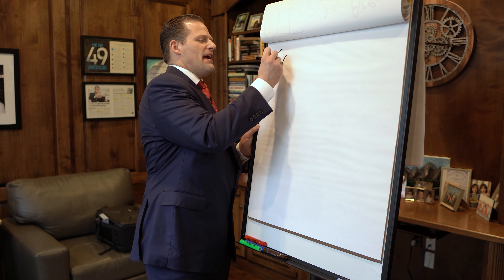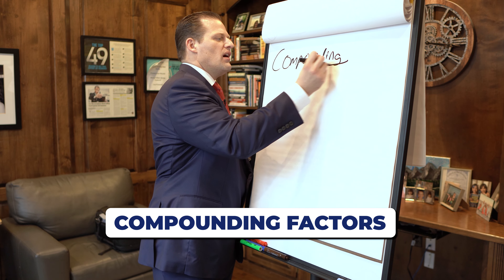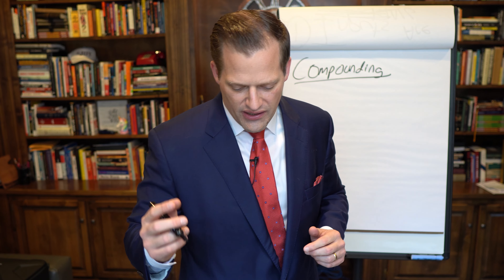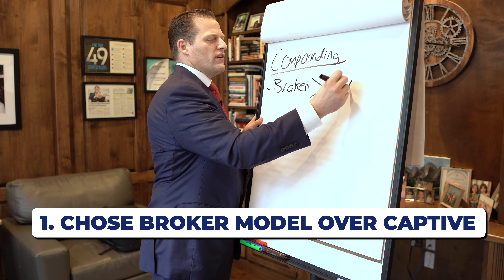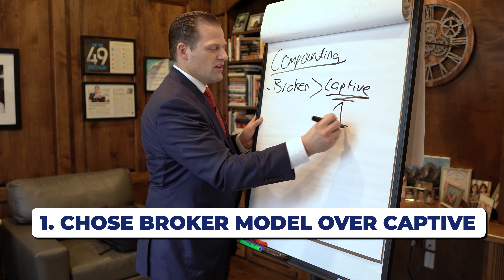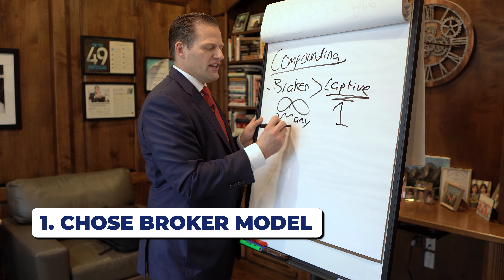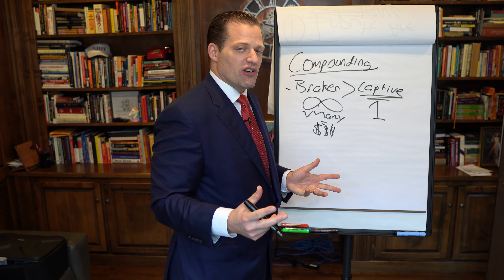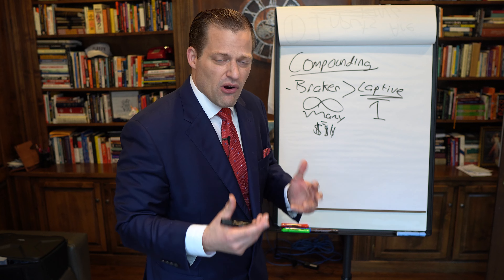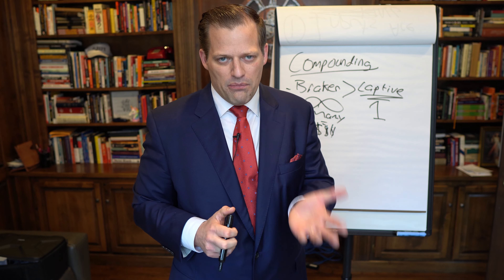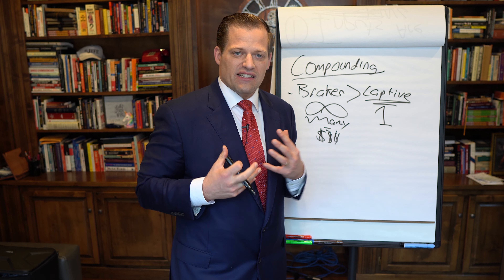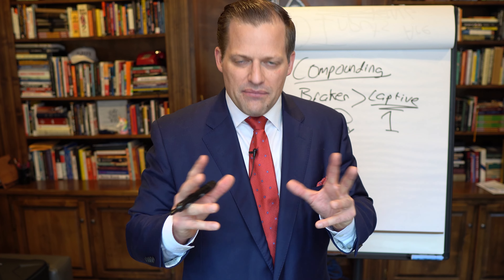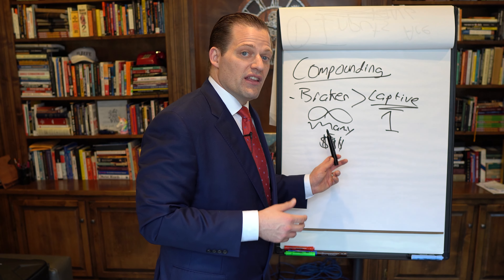The last things I want to cover are compounding factors that help you write more business and make more money. Number one: choose the broker model over captive. A captive company usually has just one carrier, while a broker model has many. Having many carriers equals more money because you can offer better options to clients by shopping around. With captive, you're forced to push products on clients, which is ethically problematic if you know they're getting an inferior product.